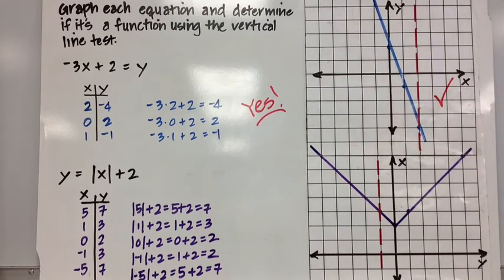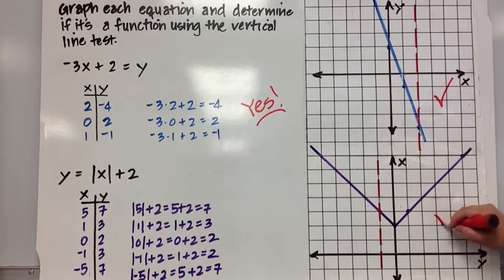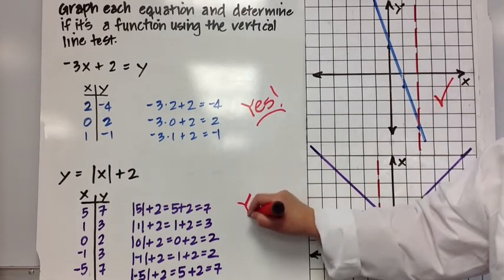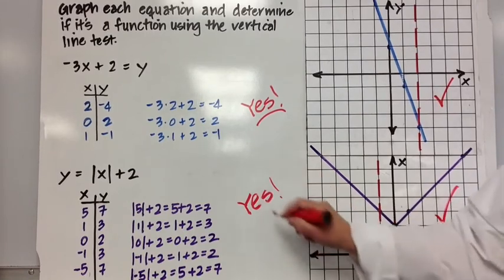So we'd say yes, that passes the vertical line test. And y equals the absolute value of x plus 2 is a function as well.